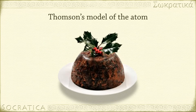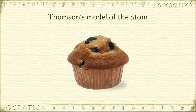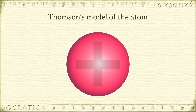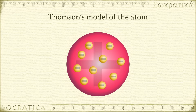To account for his observations, Thomson proposed the plum pudding model of the atom. If you've never had plum pudding, that name may not make a lot of sense to you. So imagine you have a dense, chewy cake with little raisins all through it — maybe like a raisin bagel, or a chocolate chip muffin if you prefer. The cake part is the bulk of the atom and it's positively charged, while the little sweet bits of raisin or chocolate would be the negatively charged electrons.